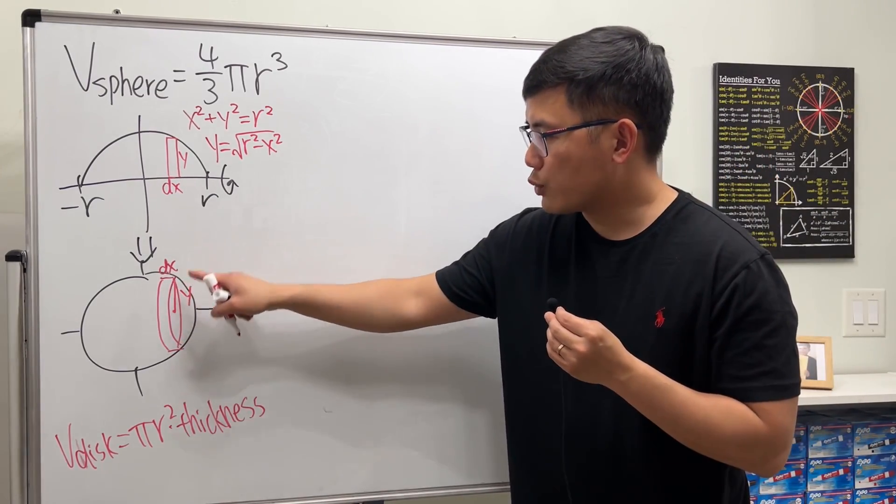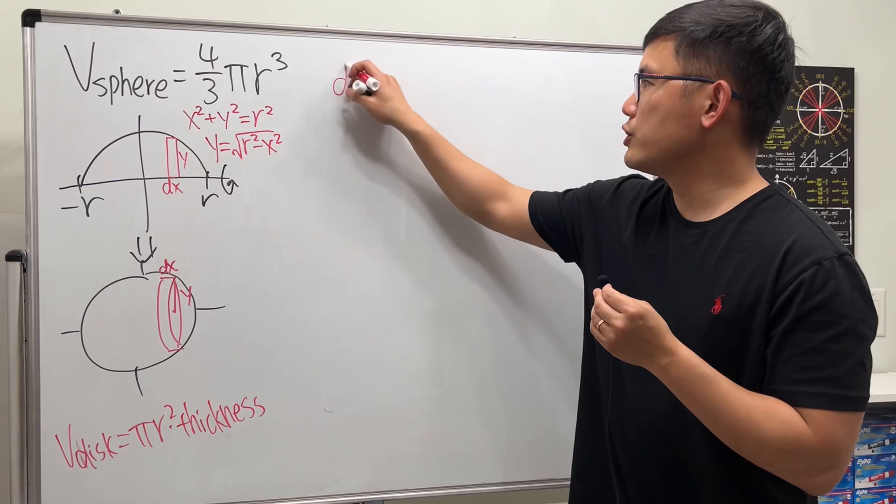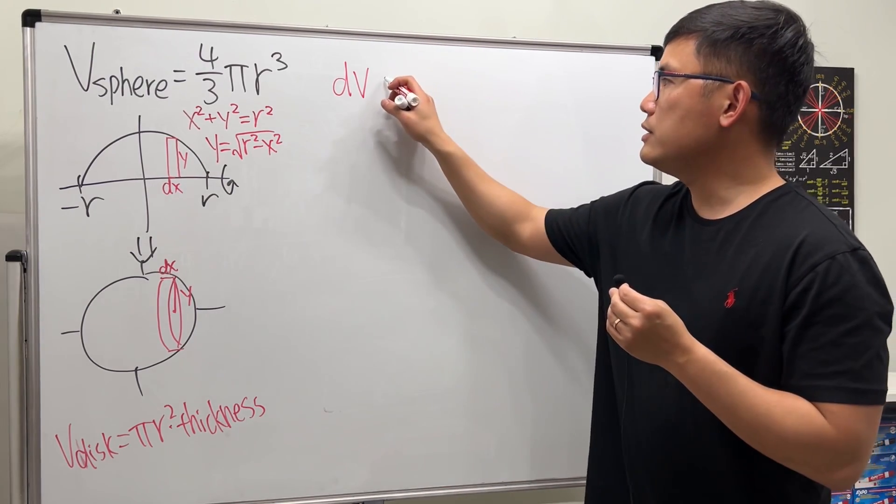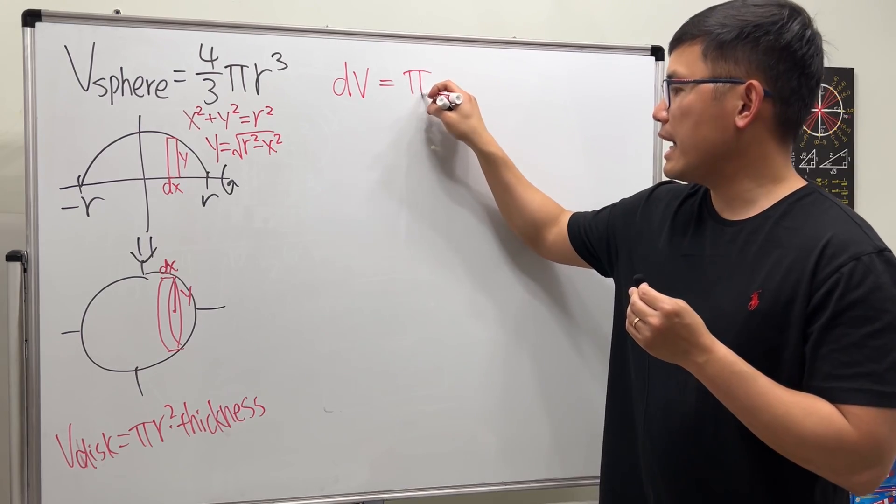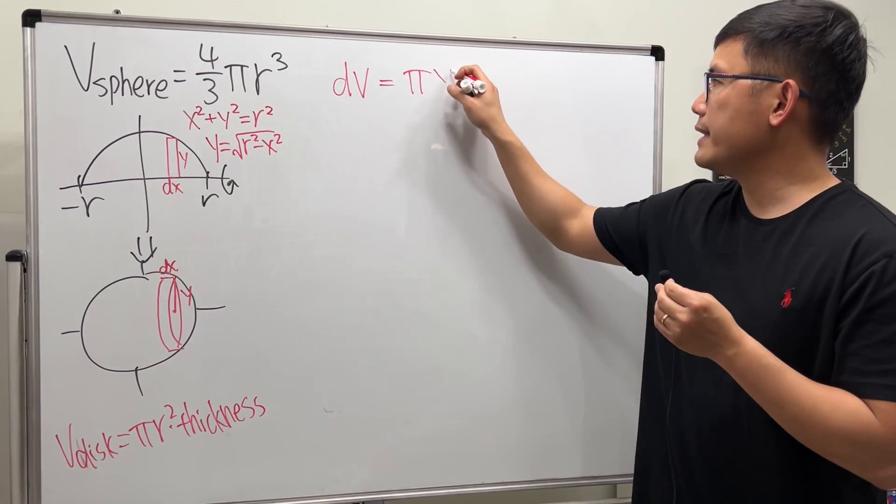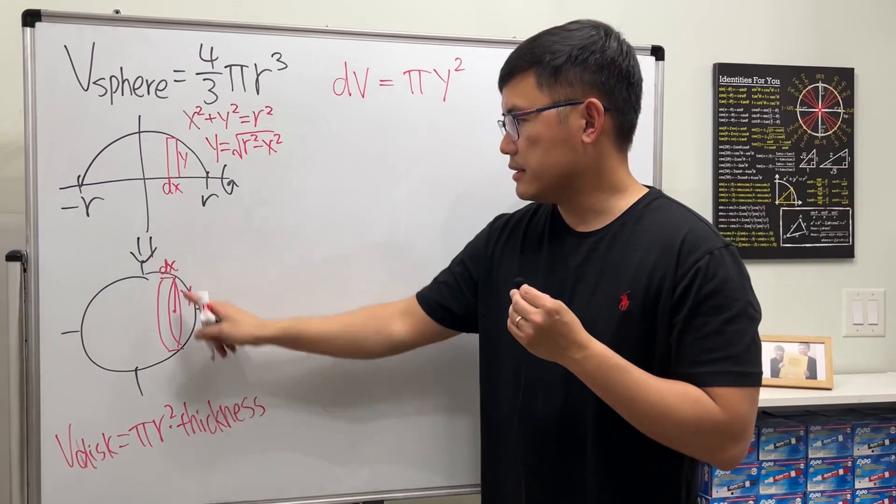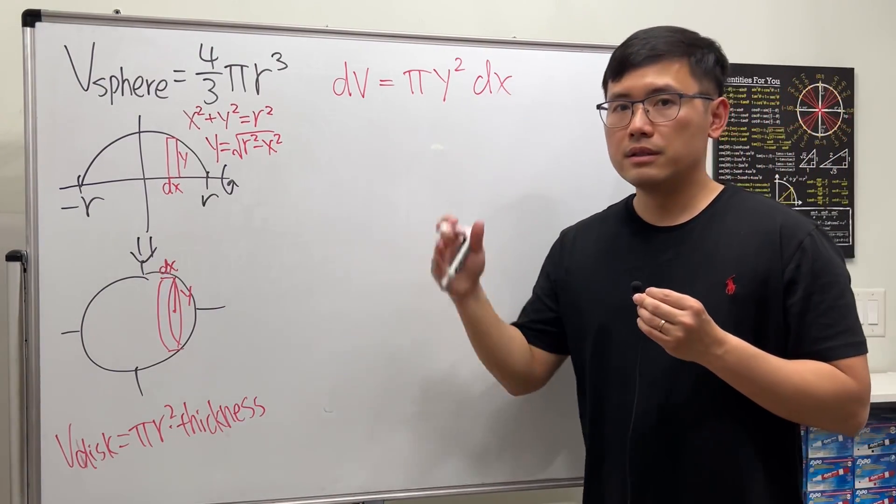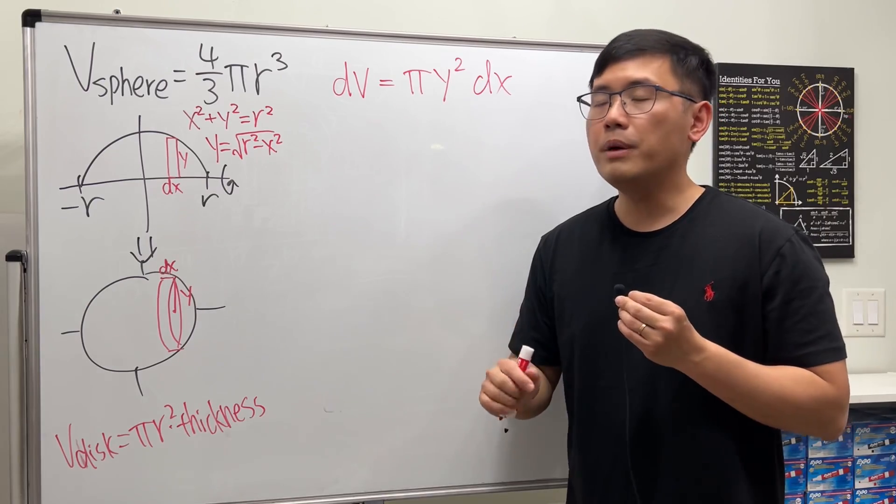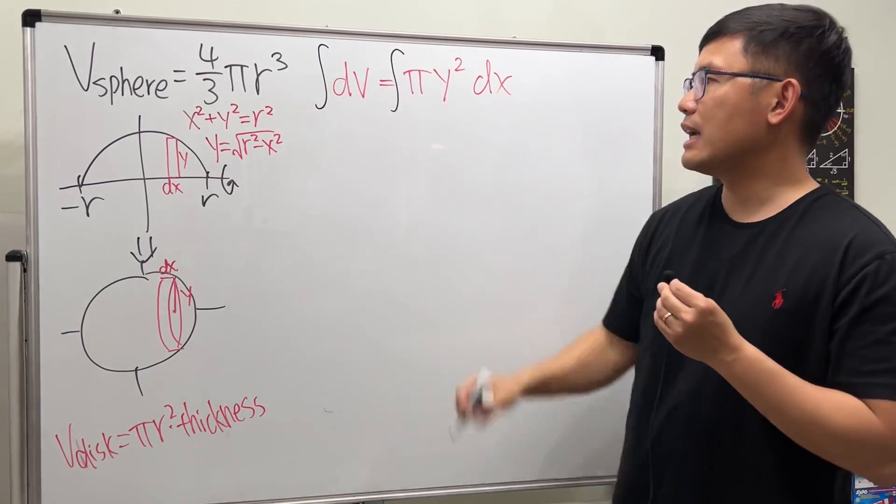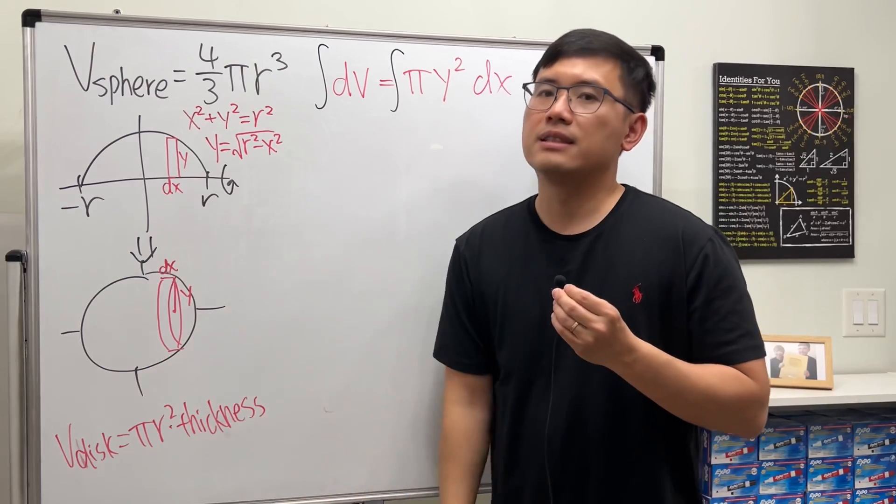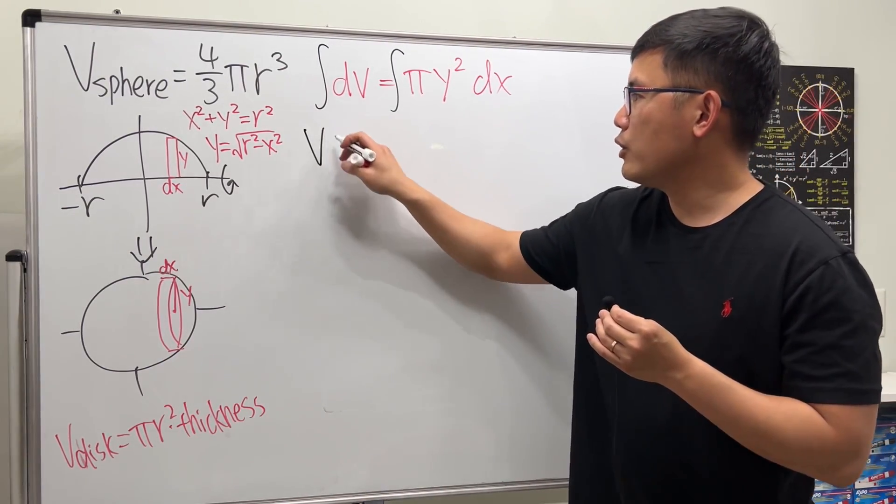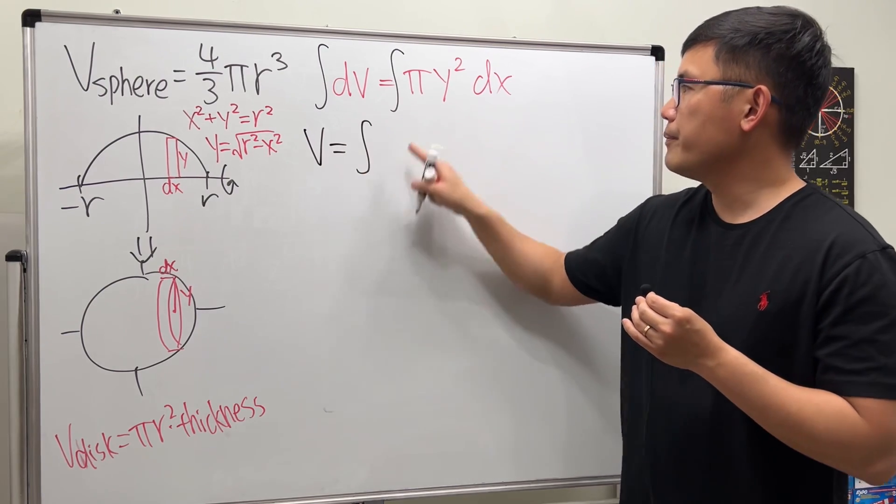Now, the volume of this red disk is just a small change in the volume. So we can write that as dV. It's just going to be π, and the r is the y, so we have y², and the thickness is the dx. Small change in the volume. And we just have to add up all such volume of the disks. Then we can get the whole thing. So, volume equals integral.